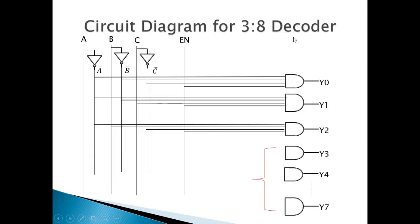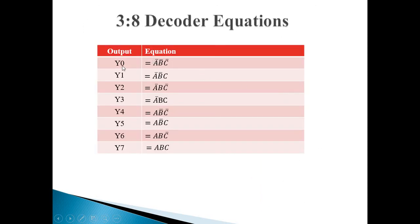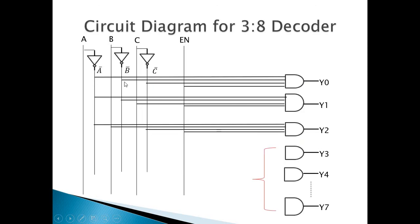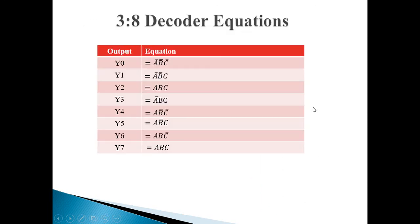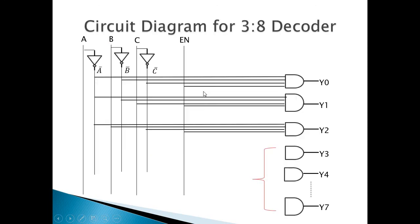Here is the circuit diagram. For Y0, the equation is A bar · B bar · C bar, so it is A bar, B bar, C bar, and enable connected to an AND gate. Y1 is A bar · B bar · C, so A bar, B bar, C, and enable are connected. All inputs are connected to AND gates — when all of them are 1, only the output will be 1. Similarly, you can draw circuits for Y3, Y4, up to Y7.